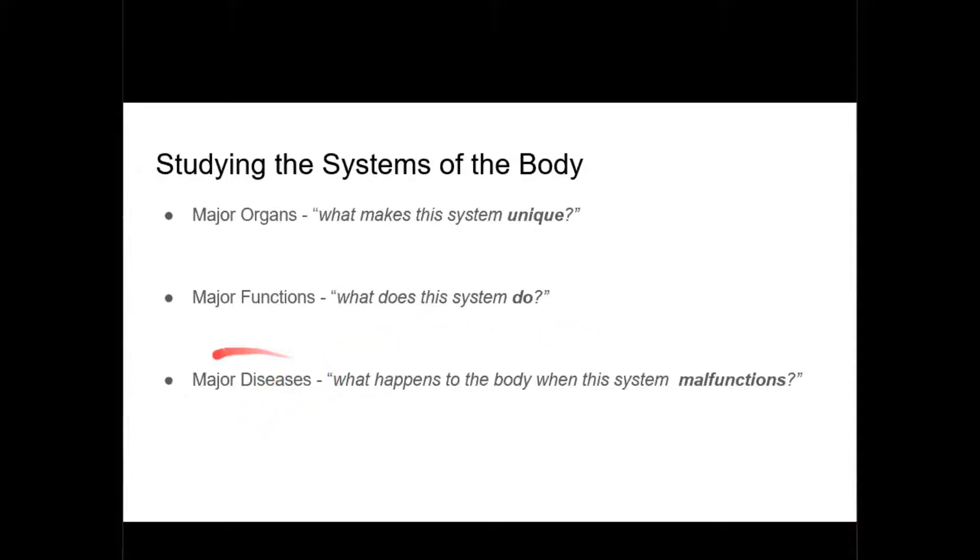You also want to ask yourself, what's the major diseases of the system? What happens when the system malfunctions, or somehow the organ is damaged? By asking yourself these three questions, you'll go a long way in the TEAS test, since a lot of the questions orient themselves around these three major things.